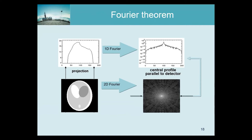The Fourier theorem says the following. If I have an object, I can take the two-dimensional Fourier transform and end up with this. Here in the center is the DC point — this is the mean of the entire image, and everywhere else are the frequencies. Along this axis are the sines oscillating horizontally, and along this axis are the sines and cosines oscillating vertically.